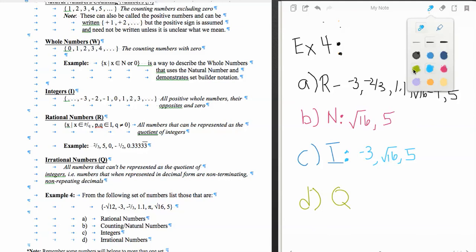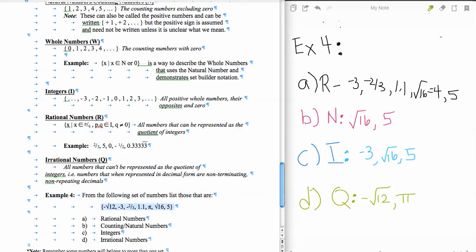And then finally, we're looking for our irrational numbers. There's only one negative number that's irrational, and that's our negative square root of 12. That's an irrational number. And then we've mentioned it over and over again that pi is also. That gives us our numbers and a description of why each is what it is. That will wrap up our time here.